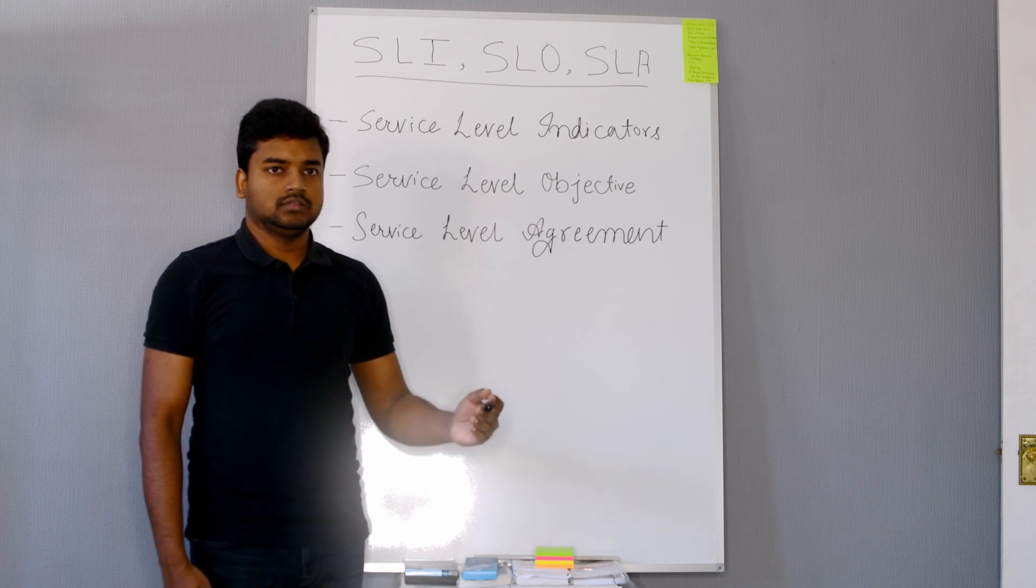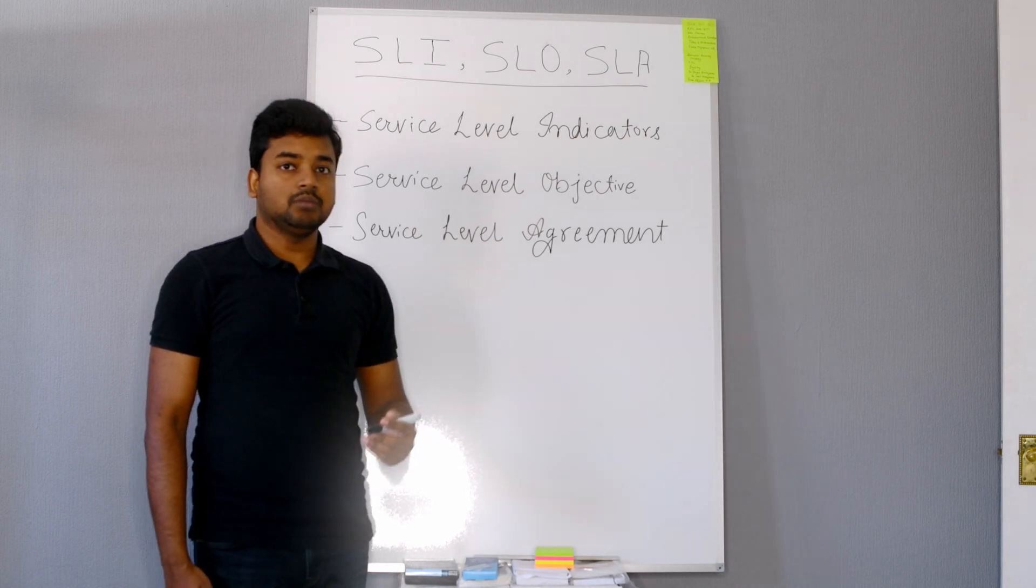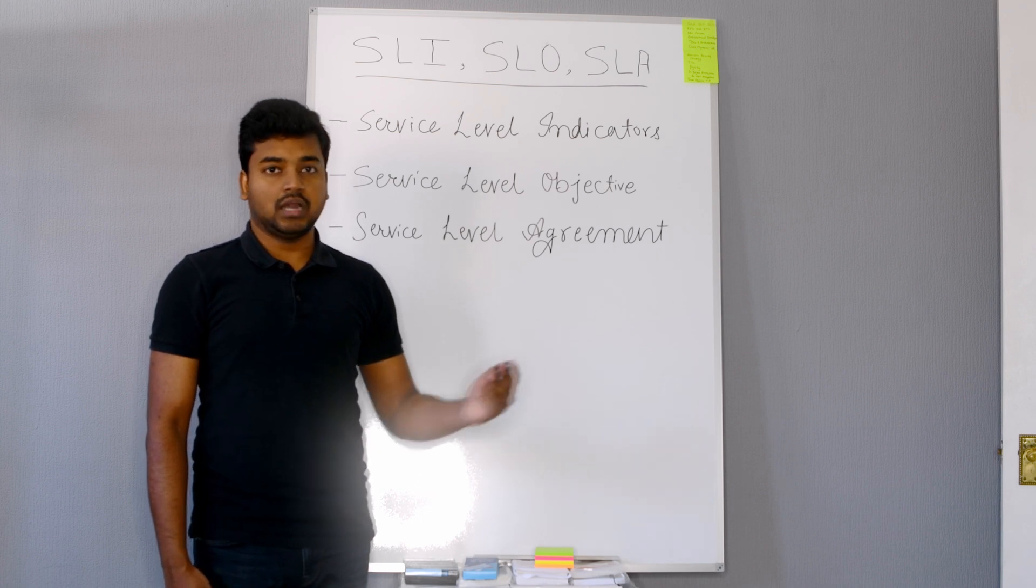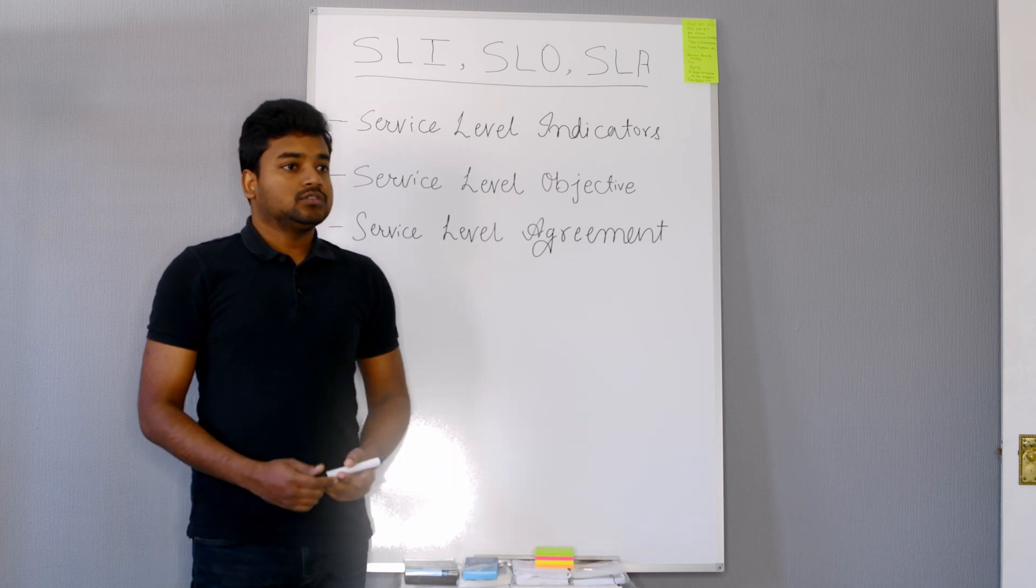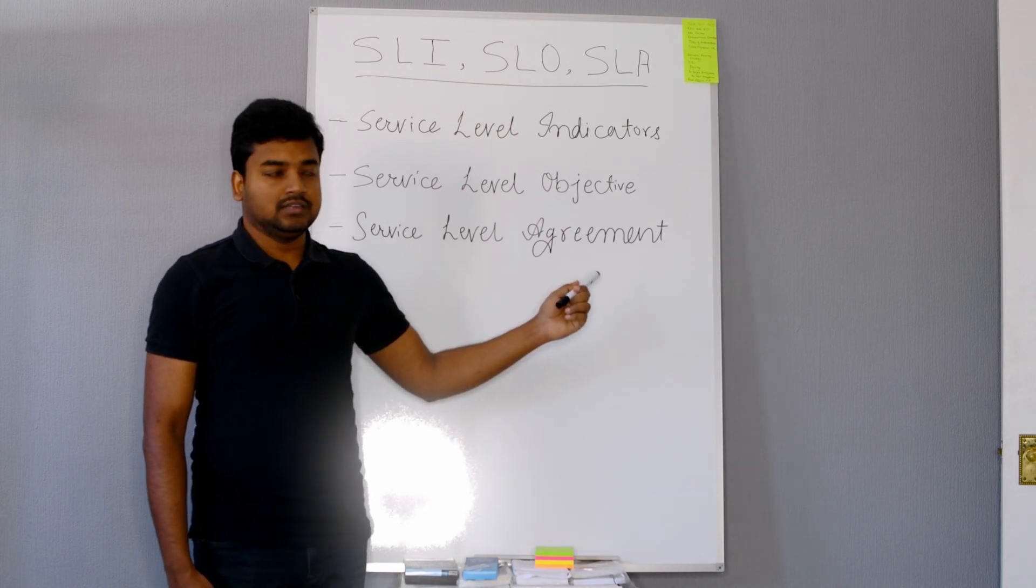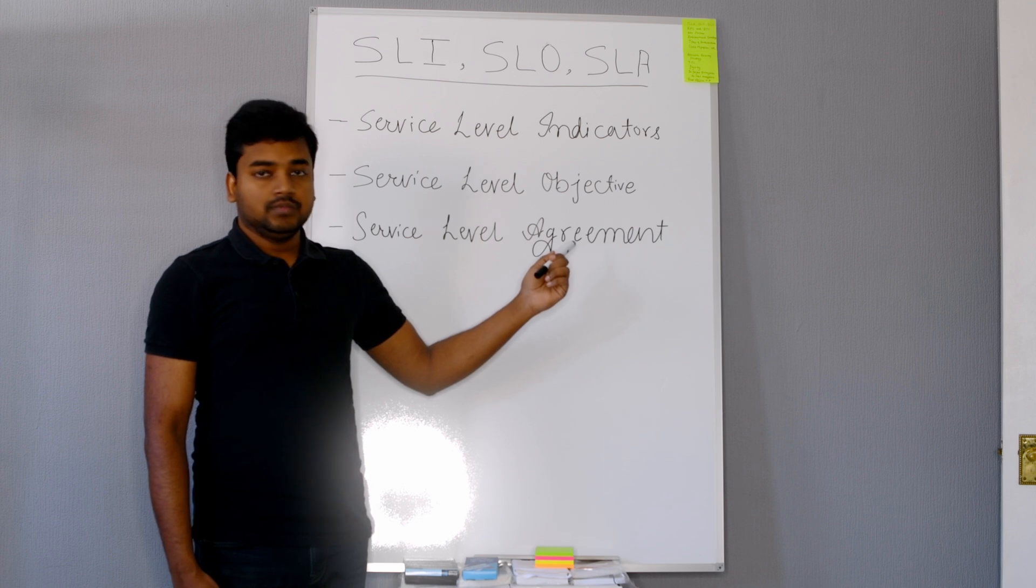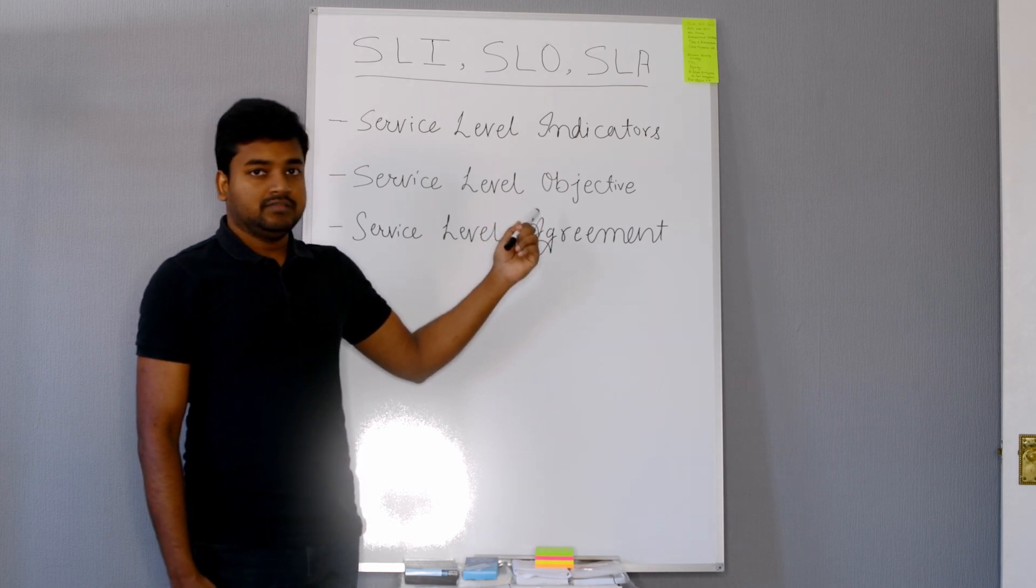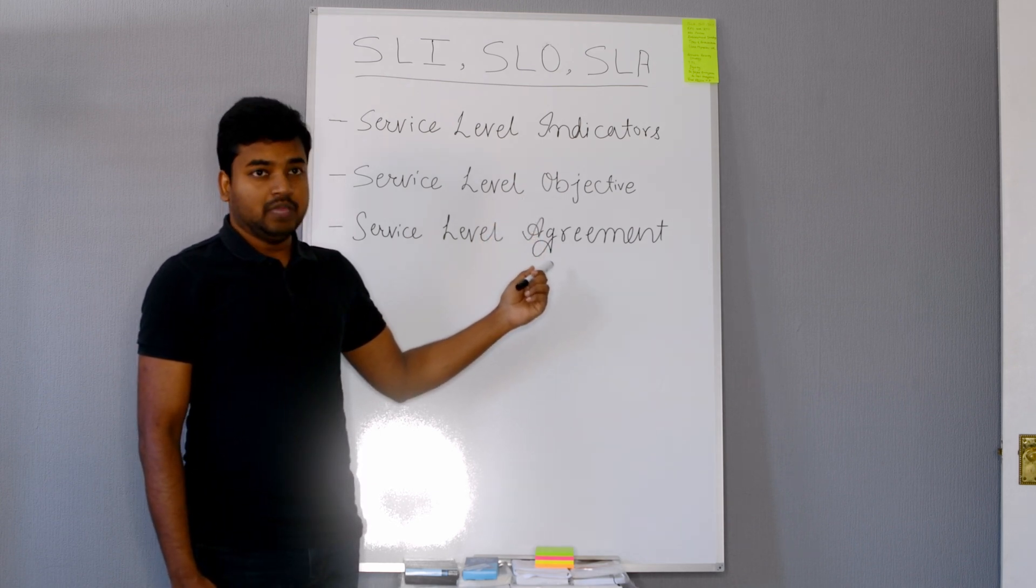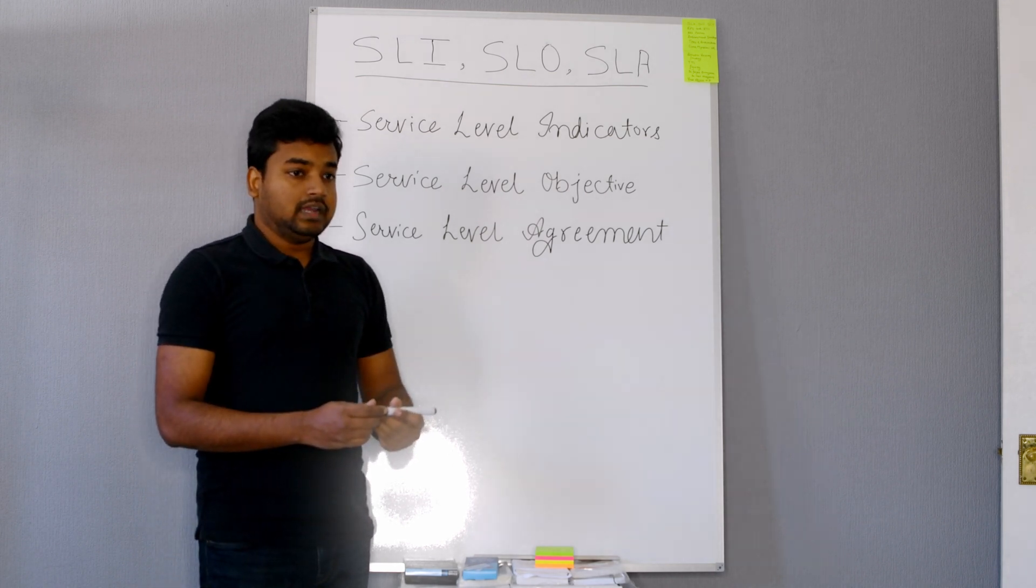And what about the agreement? Agreement is the promise we are making to our partners or the client. So it has some penalty, be careful with the agreement. Objective was 20, my indicator was 25, but the agreement I'm going to make would be 16 or 15.